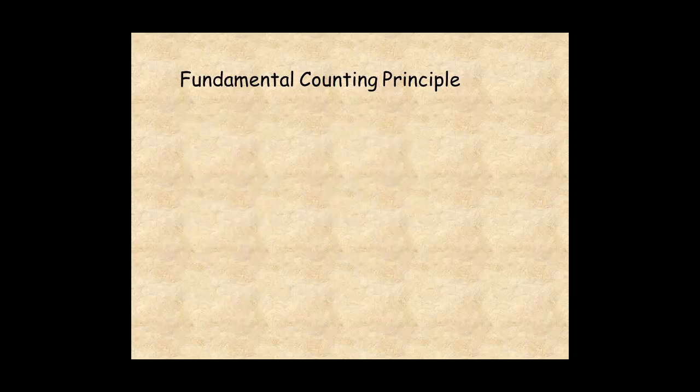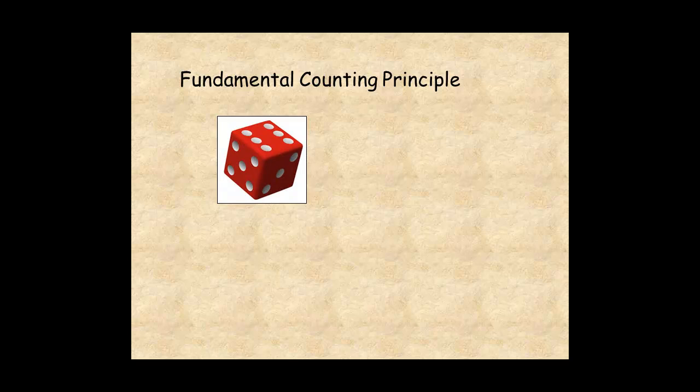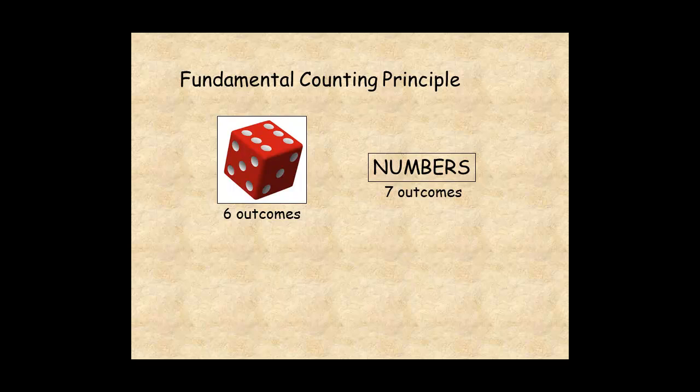You can use the fundamental counting principle to calculate the probability of events. In this example, you are going to roll a dice and randomly select a letter from the word numbers. There are six possible outcomes for the dice, and seven letters in the word numbers. So that's a total of six times seven equals 42 possible outcomes. So the probability of rolling a six and selecting the letter M would be one chance in 42, 2%.